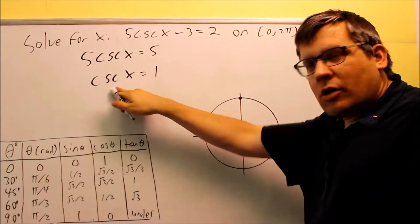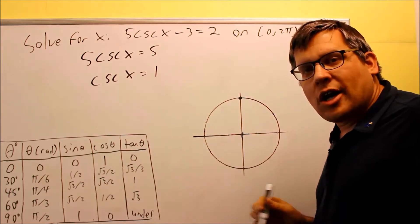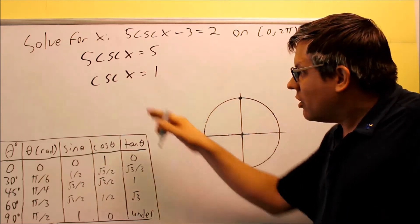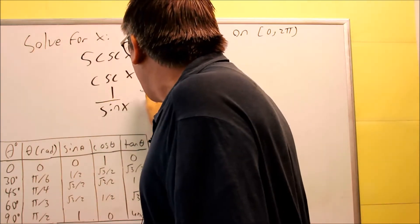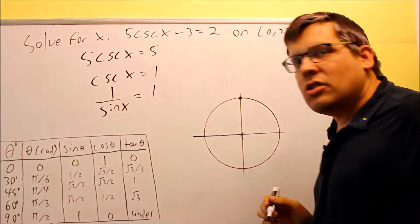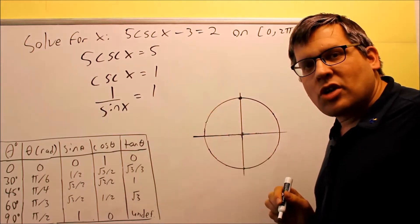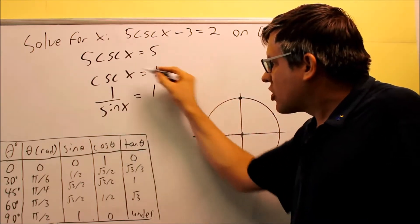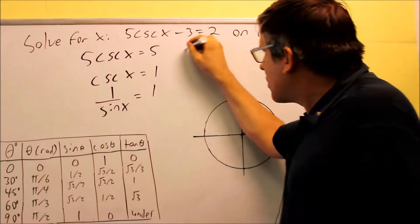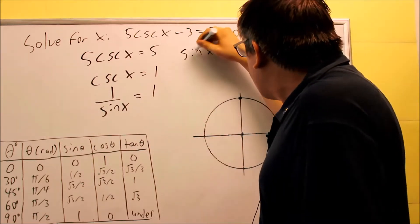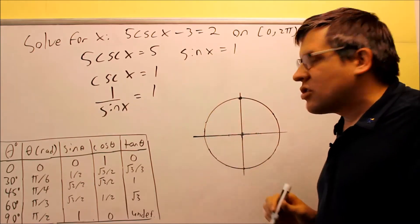Now cosecant — we don't have that on our table here. We want to convert that over into a sine and we're going to use our reciprocal identity for that. Cosecant is the same thing as 1 over sine. So I have 1 over sine equals 1, and I want to solve for sine x. I can do that by cross multiplying, so I get sine x equals 1.